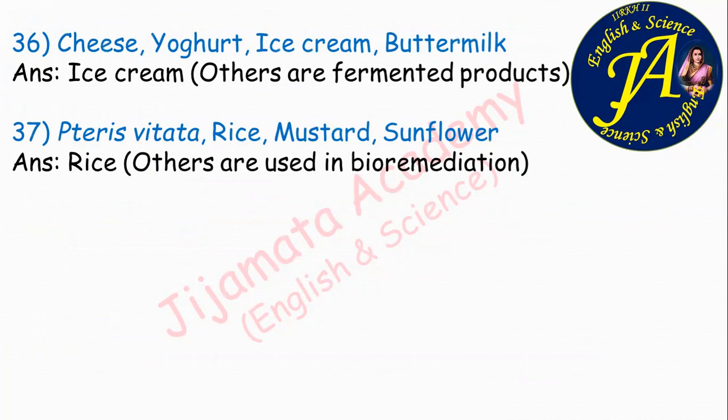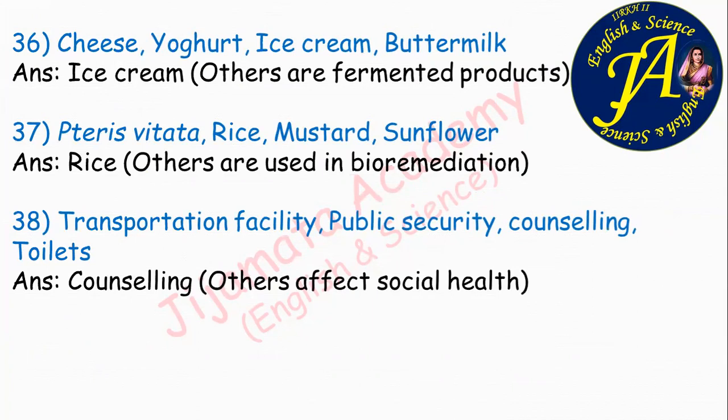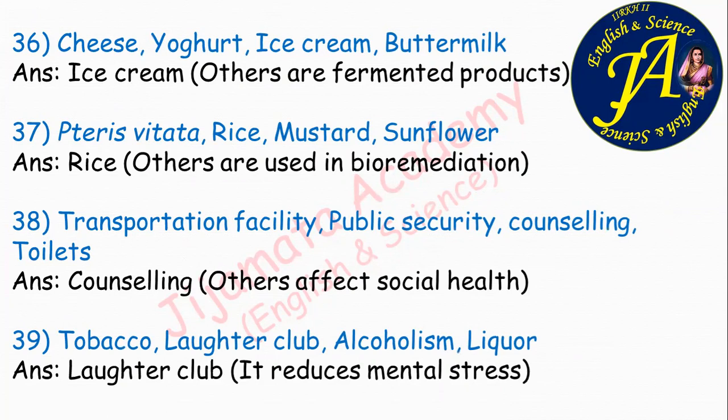Transportation facility, public security, counselling, toilets. The correct answer is counselling, because all other factors affect the social health of a person. Tobacco, laughter club, alcoholism, liquor — correct answer is laughter club, because it reduces mental stress, while tobacco, alcoholism, and liquor increase mental stress and affect social health.